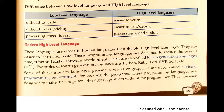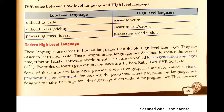These modern high-level languages are easier to learn and write. They are designed to reduce the overall time, overall effort, and overall cost. When we write HTML coding, Python coding, or Perl coding, it will not take so much time or effort because it is very easy to understand. These are also known as fourth generation languages — 4GL — and examples include Python, Ruby, Perl, PHP, and SQL.